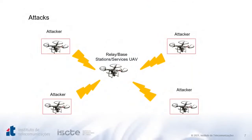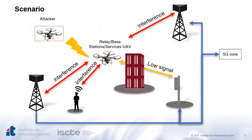The problem gets worse when considering attacks in UAV networks. Attacks against UAV networks may include forgery of authorization, deauthentication, spoofing, and intrusion techniques at higher layers of the network, as well as jamming and eavesdropper attacks at the physical layer. The whole scenario is presented in this figure, where you can see UAV attacks, interference, and low signals at the base station that the UAV might experience in real-world scenarios.